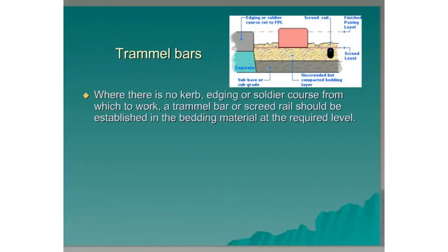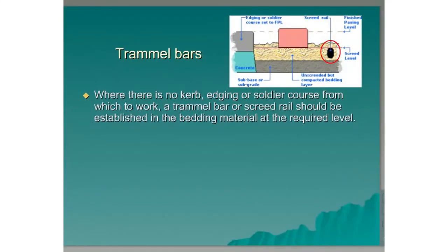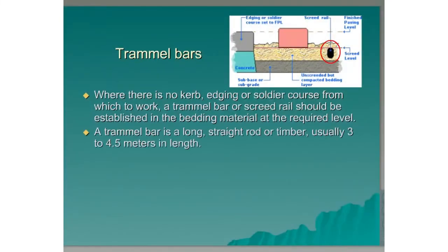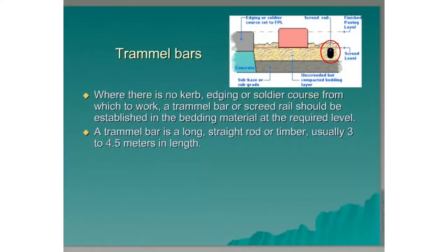Trammel Bars. Where there is no kerb edging or soldier course from which to work, a trammel bar or screed rail should be established in the bedding material at the required level. This is used as a guide for screeding the bedding layer. A trammel bar is a long straight rod or timber, usually 3 to 4.5 meters in length.